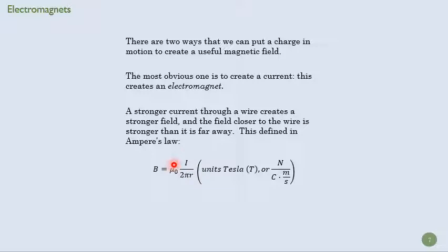That just says what we just said. Here's the current, I, make that big, and B, our magnetic field, gets bigger. As R grows, as we get farther away from our wire, then B gets smaller.